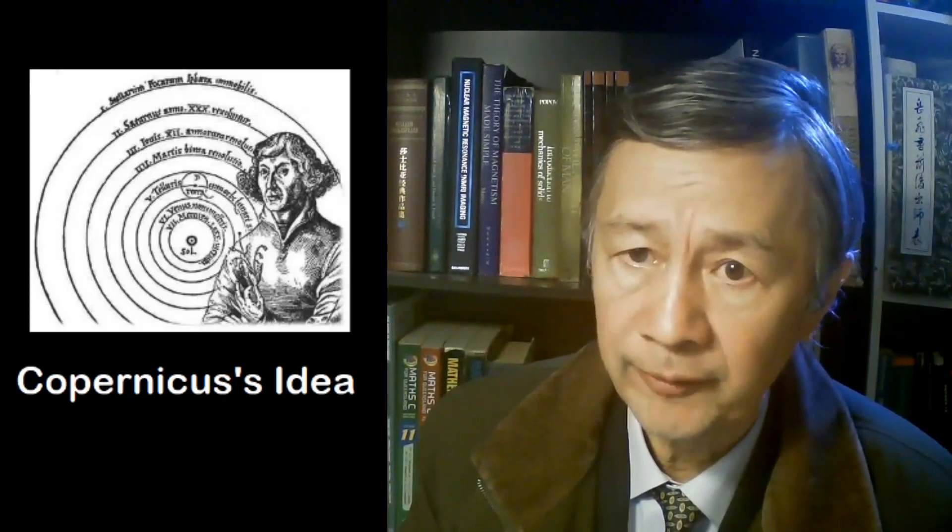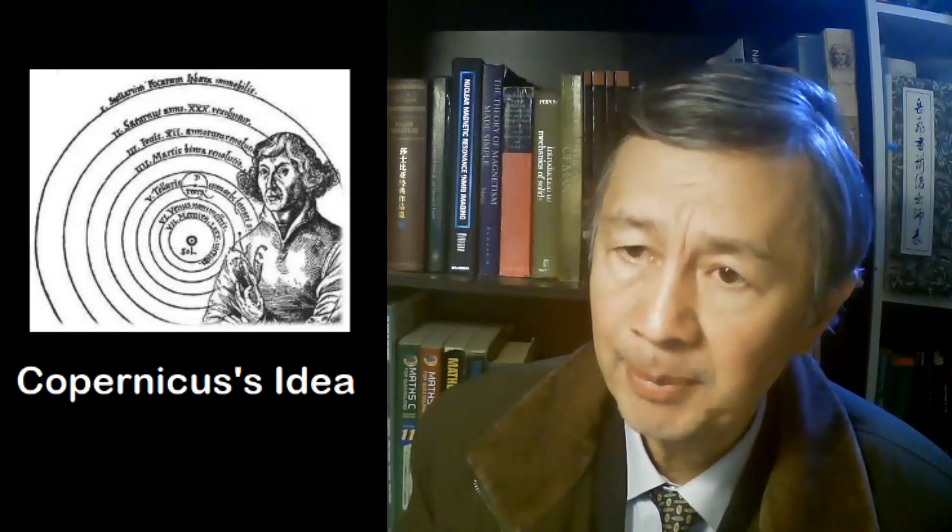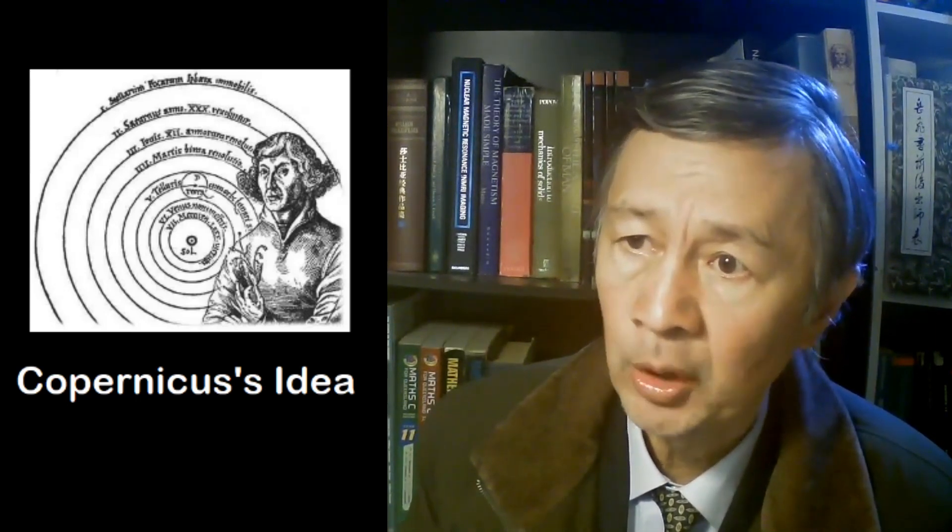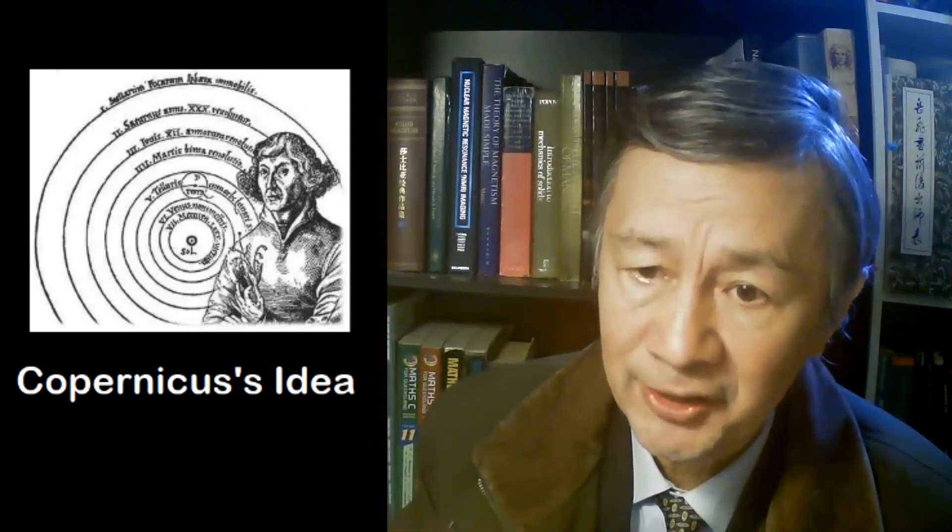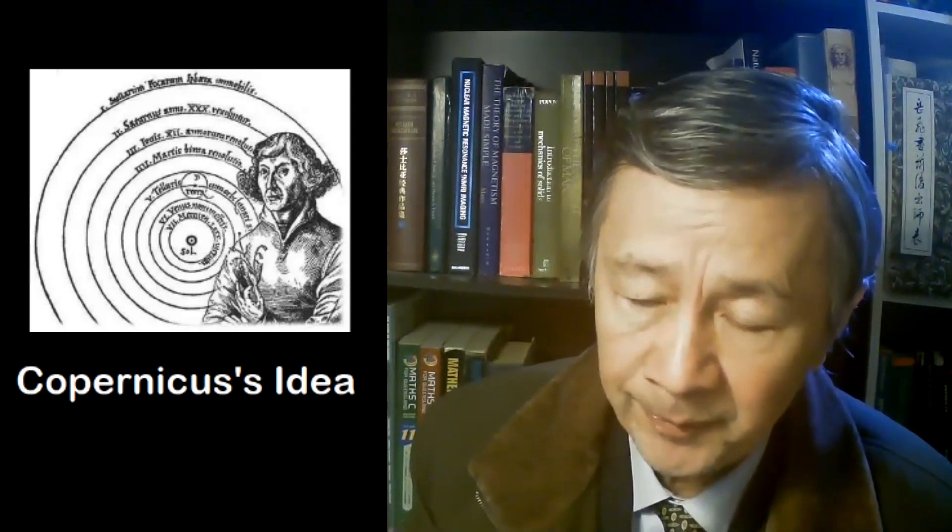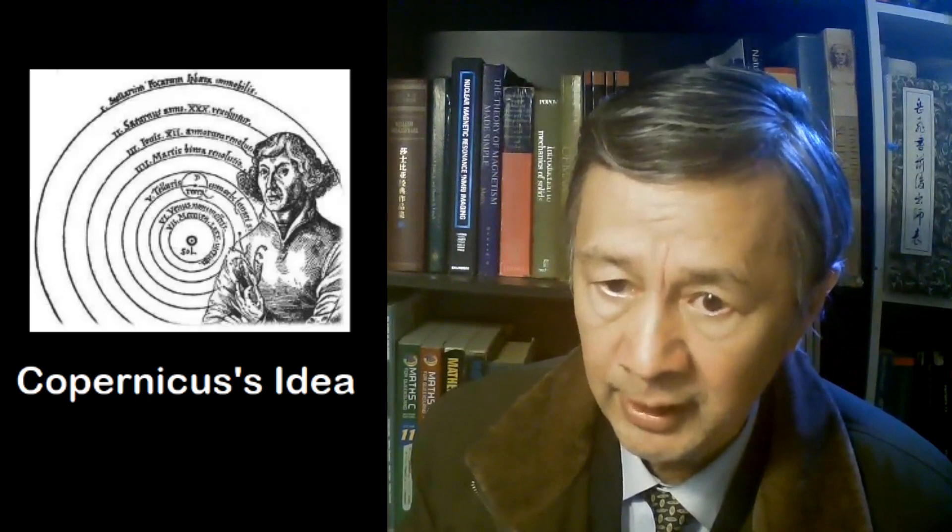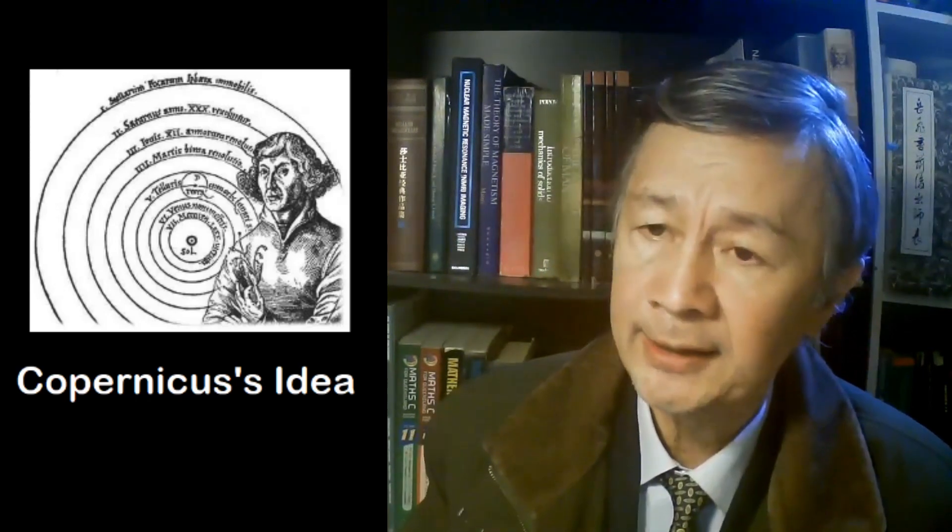A truly paradigm shift was made by Copernicus, who first realized that the complicated Ptolemy orbits could be as simple as a circle if the Sun, instead of our Earth, is considered as the center.